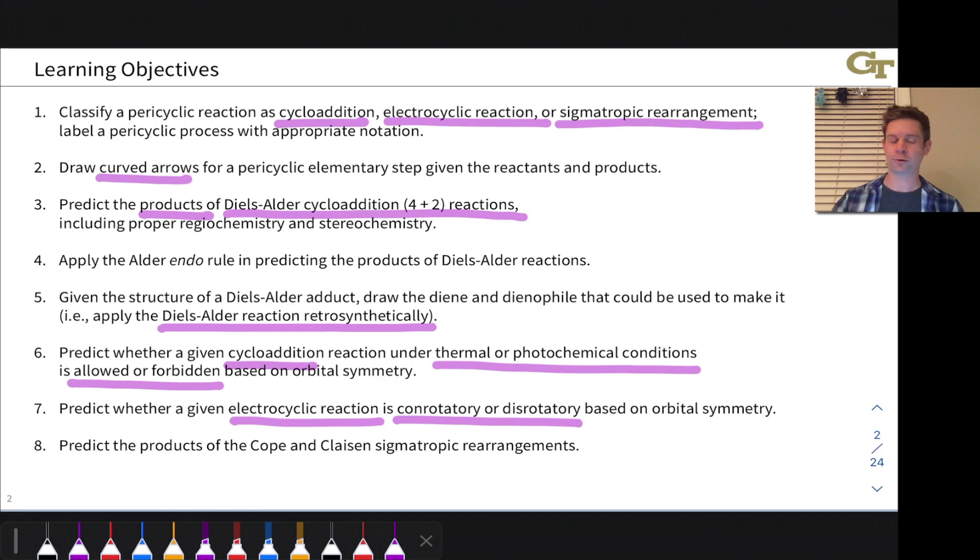Finally, we will see two important practical examples of sigmatropic rearrangements, both of which are 3,3-rearrangements as we'll call them: the Cope and the Claisen. We'll learn how to draw curved arrows for these—again, it's not as complicated as it sounds with cyclic electron flow—and draw the products, particularly with the right connectivity for both of these types of rearrangements.